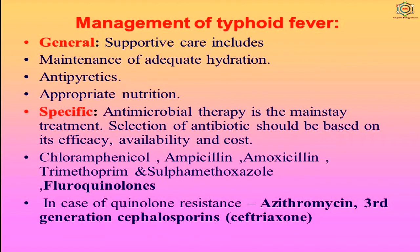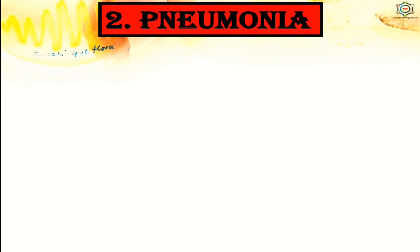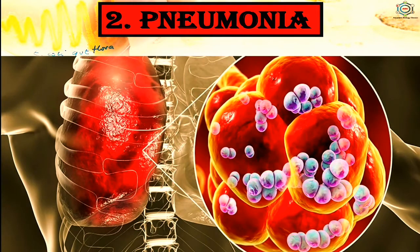The second disease is pneumonia. In human beings, pneumonia is caused by bacteria like Streptococcus pneumoniae (commonly called pneumococcus) and Haemophilus influenzae. It is a serious disease of the lungs. Fluid collects in the alveoli and bronchioles, with the result that lungs do not get sufficient air to support life.